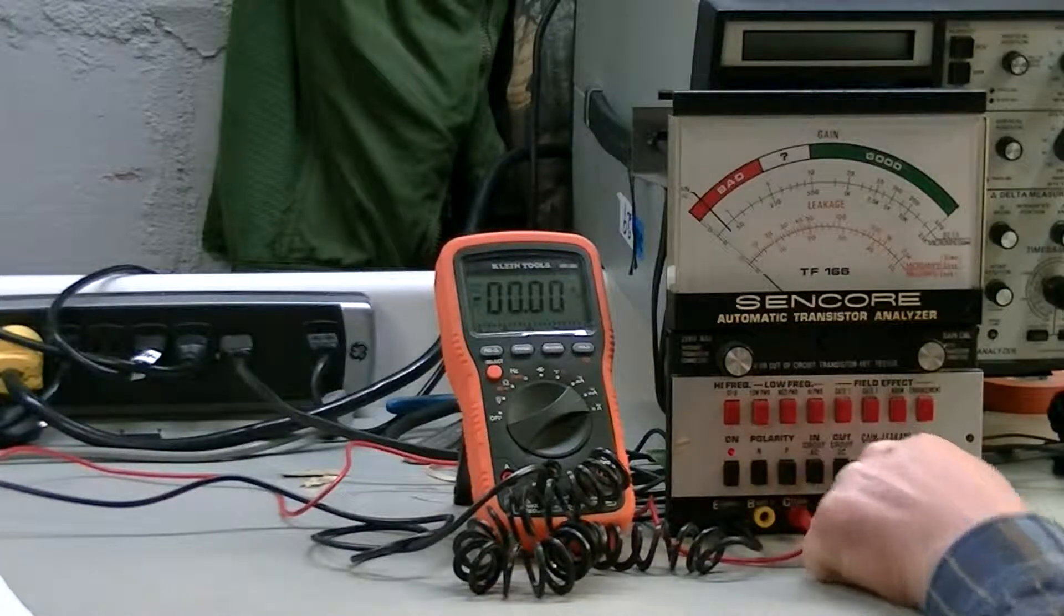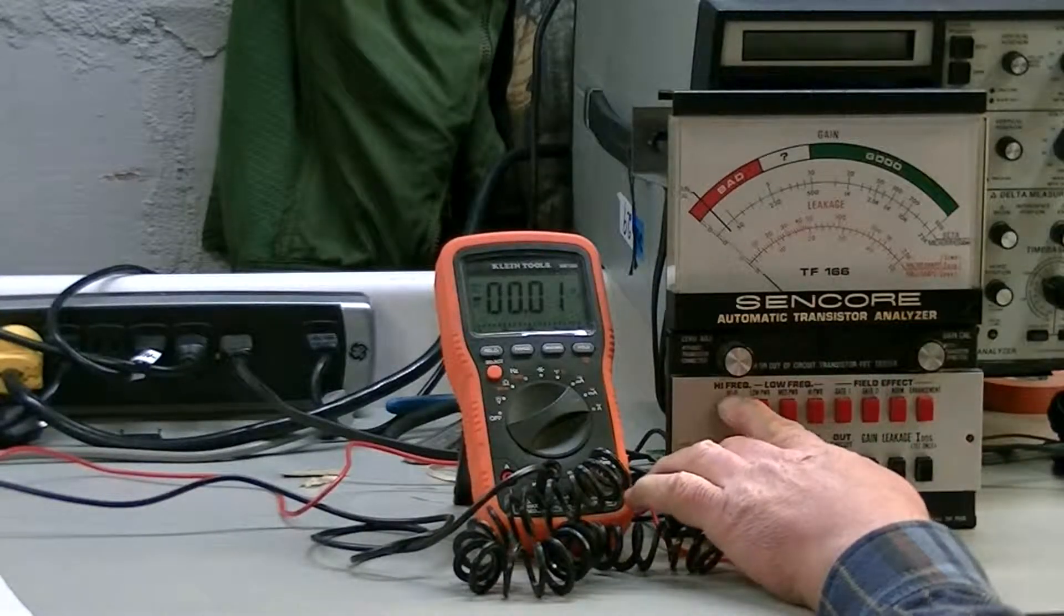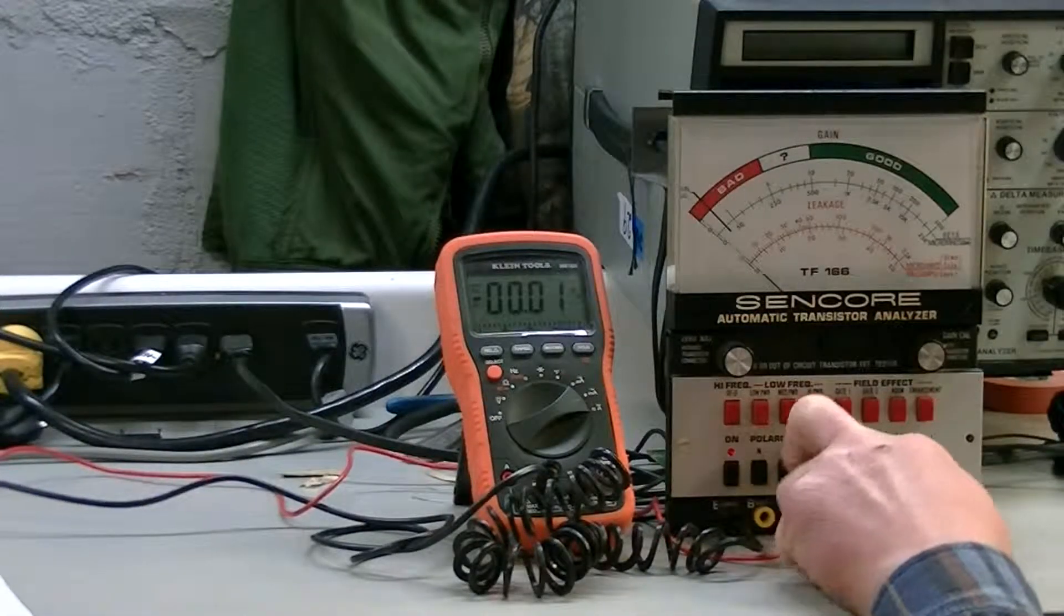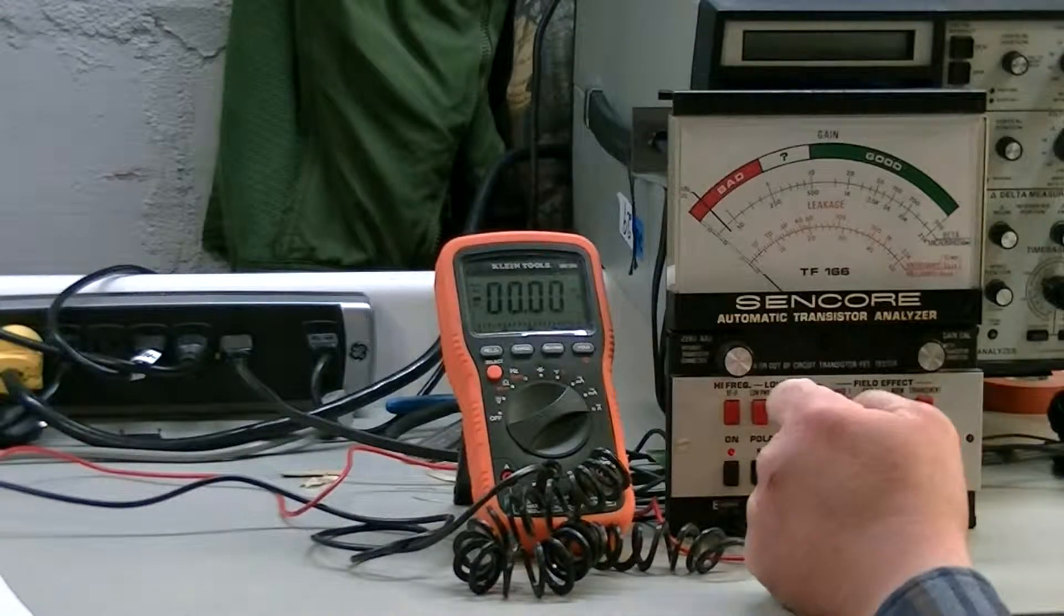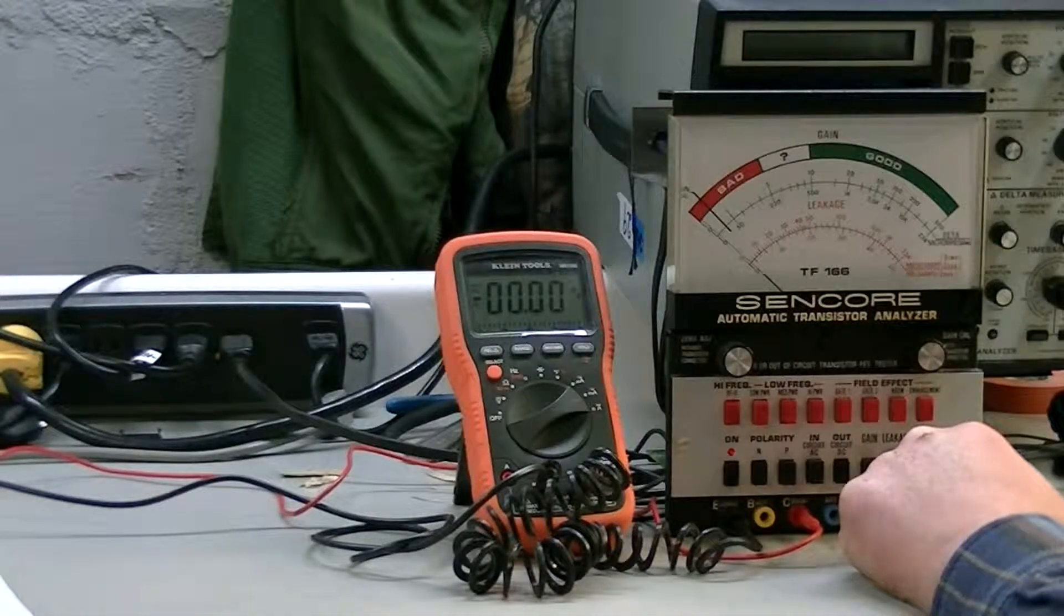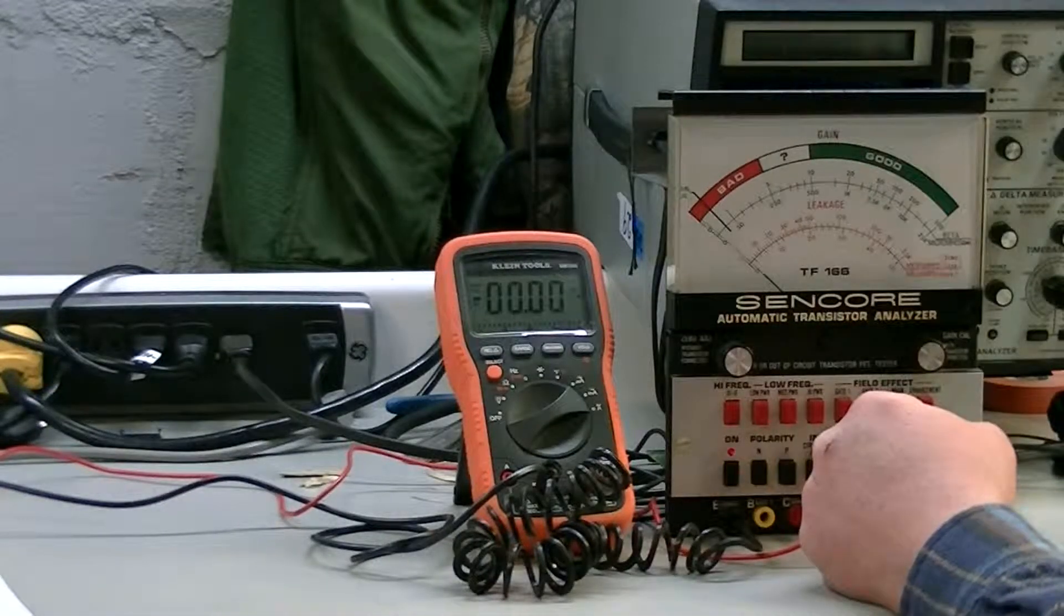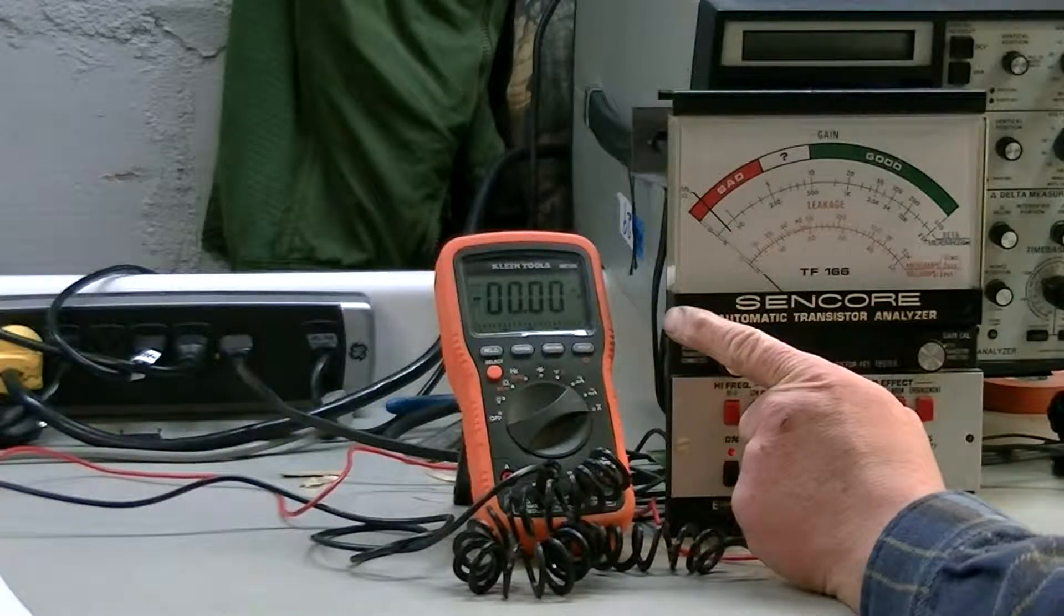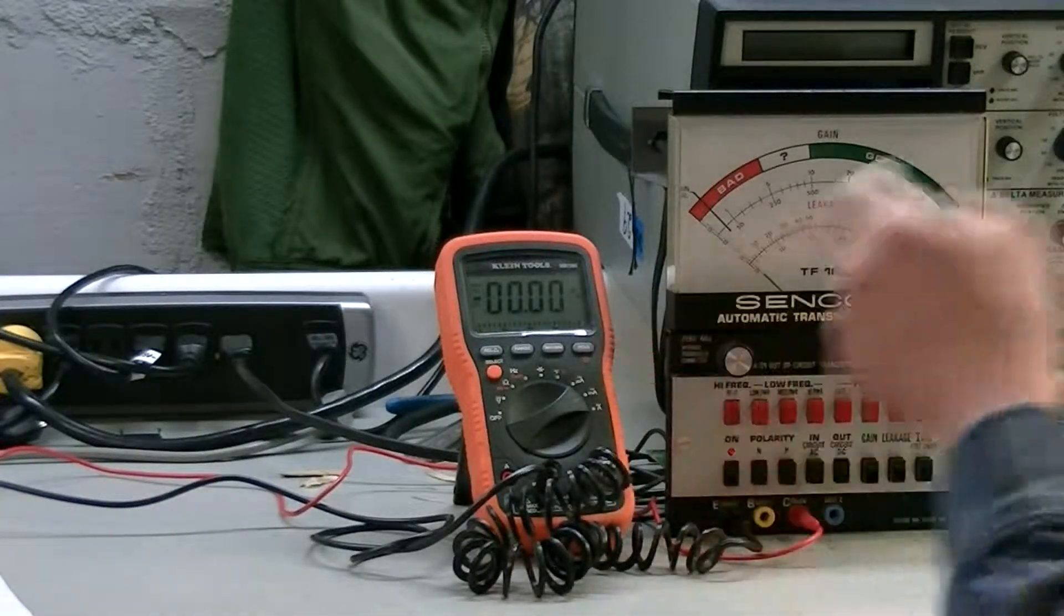Then you press the gain, oh, by the way, your settings on this is RF IF, negative polarity, the DC circuit out. Okay, and you're supposed to press the gain button and adjust the front panel gain calibration until you have 0.5 milliamps on the multimeter.